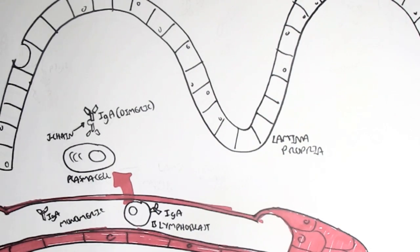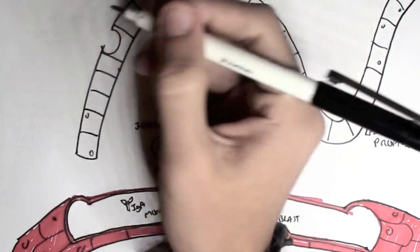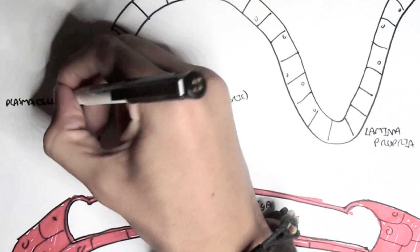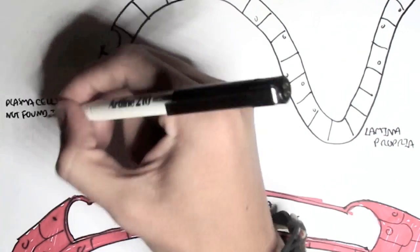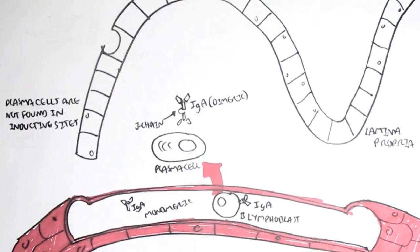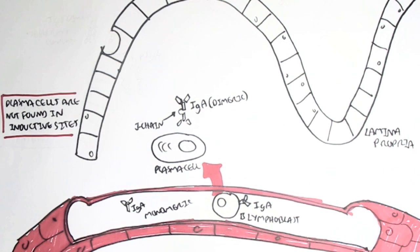Another important thing is that plasma cells are not usually found in inductive sites, such as in the gut, the inductive site being the Peyer's patches. Because plasma cells are effector cells, they are usually found in the lamina propria, where they can secrete antibodies to protect against infection.